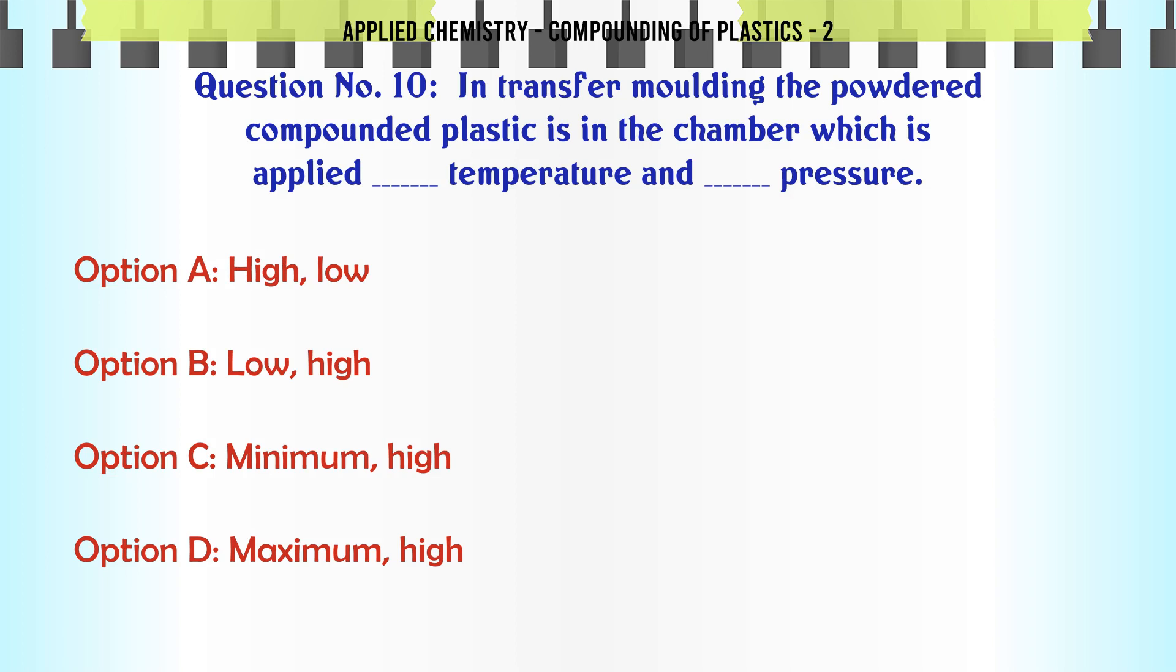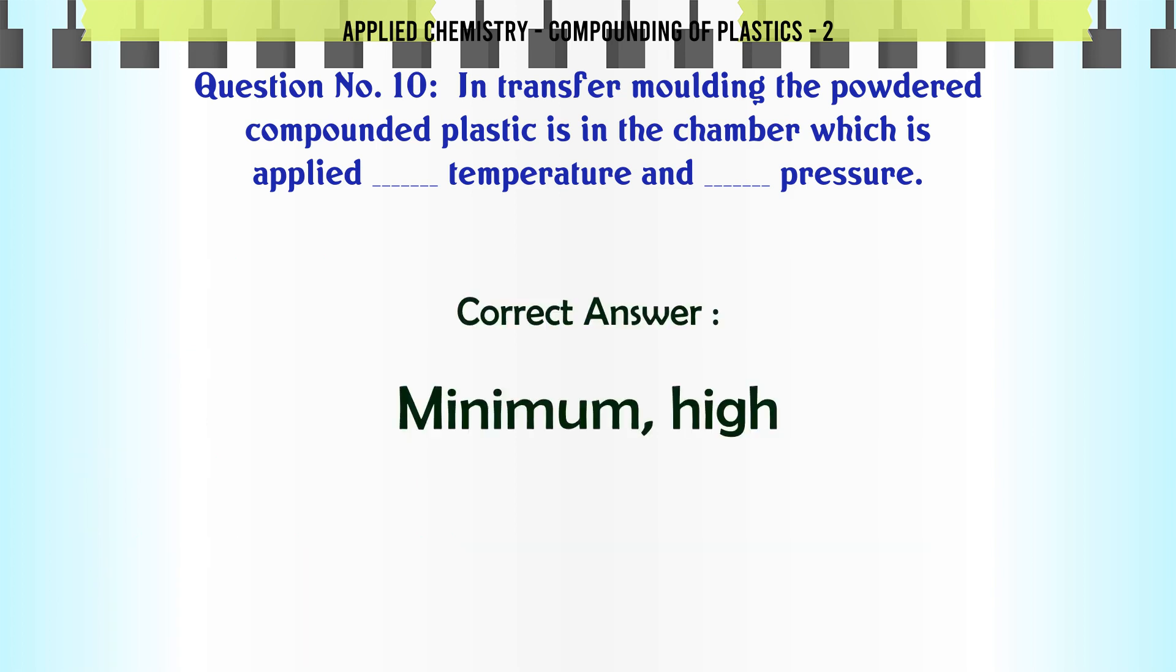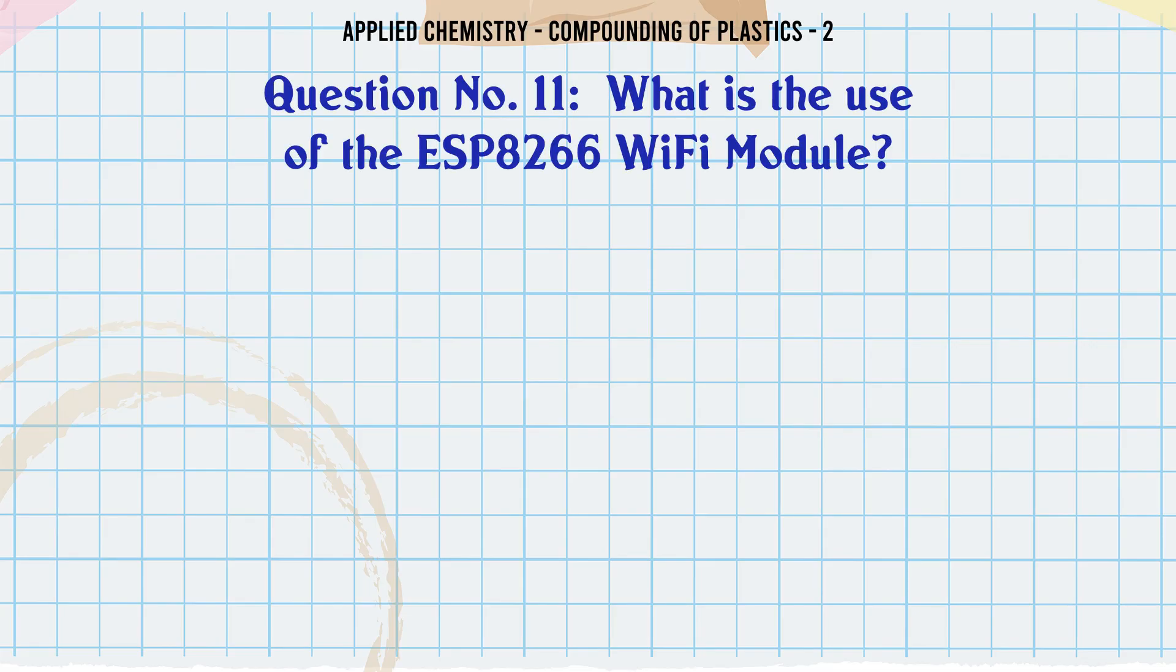In transfer molding the powdered compounded plastic is in the chamber which is applied temperature and pressure A. High, Low, B. Low, High, C. Minimum, High, D. Maximum, High. The correct answer is Minimum, High.